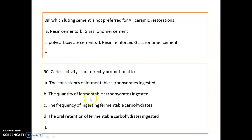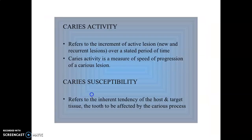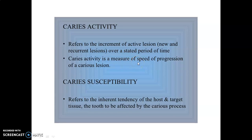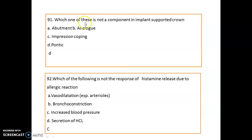What is the difference between caries activity and caries susceptibility? Caries activity is the increment of active lesions over a stated period of time — may be new and recurrent lesions — and it is a measure of the speed of progression of a carious lesion. Caries susceptibility is the inherent tendency of the host and target tissue (the tooth) to be affected by the carious process.